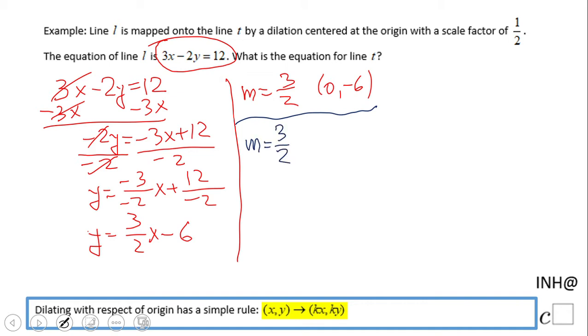Right, the dilated line and the original one, they have the same slope. What about the y-intercept? The y-intercept is going to be negative 6 times 1/2, that will be negative 3.